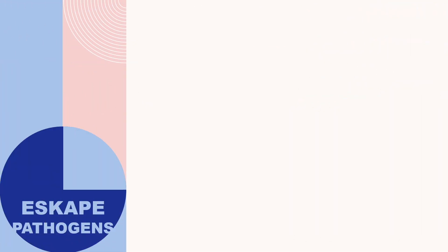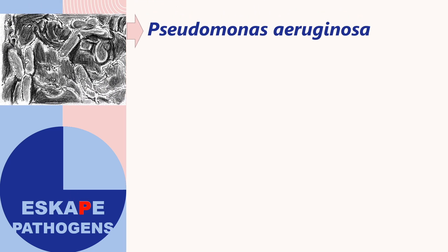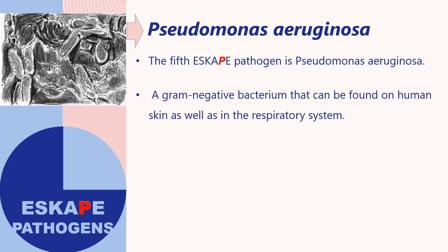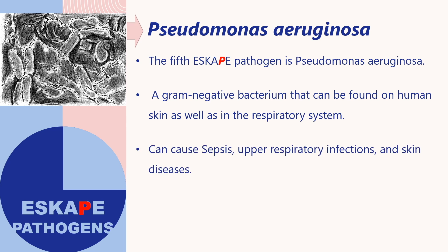The next letter, P, refers to Pseudomonas aeruginosa. This is a gram-negative bacterium that can be found in human skin as well as the respiratory system. It can cause sepsis, upper respiratory infections, and skin diseases.